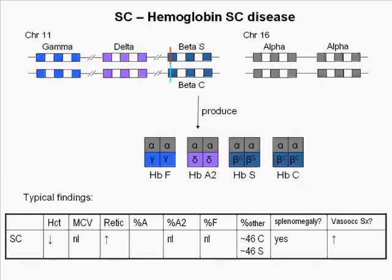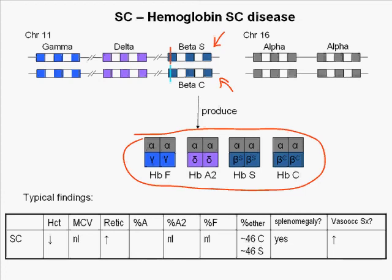In SC or hemoglobin SC disease, one beta globin gene carries the sickle point mutation and the other carries the hemoglobin C point mutation. Four hemoglobins are produced: small amounts of hemoglobins F and A2, with the balance made up of hemoglobins S and C, which are roughly in equal amounts.